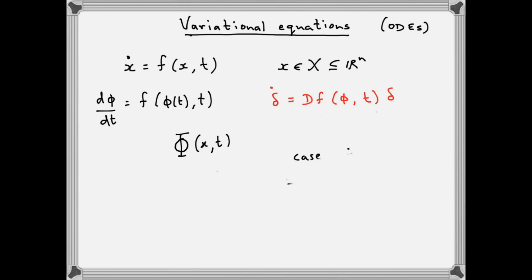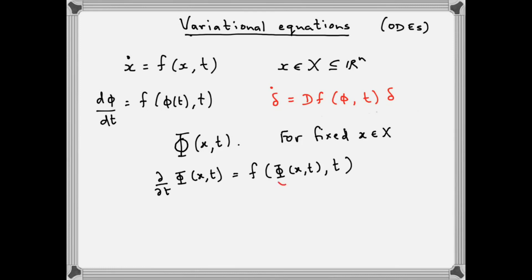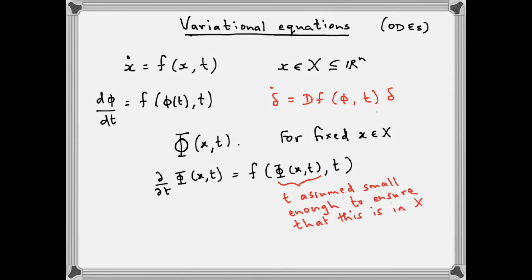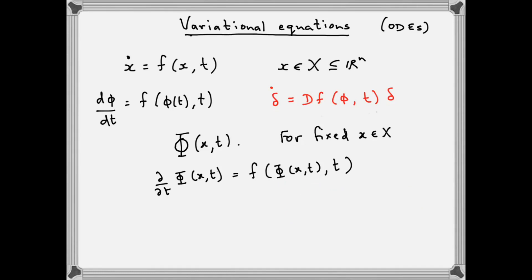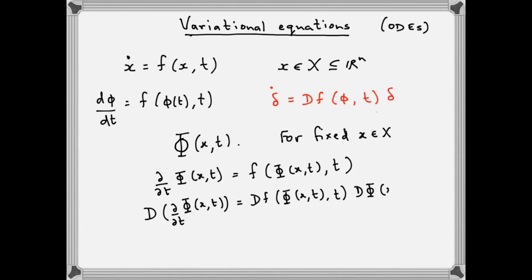What does this have to do with the variational equation? For any fixed point x in the state space, Phi(x, t) gives us a solution to the differential equation, and this makes sense for any t small enough such that Phi(x, t) still lies in the state space. Now suppose we differentiate both sides of this equation with respect to the spatial variable x — we denote this derivative by capital D, assuming everything is sufficiently differentiable. Applying the chain rule gives us an equation which at first sight doesn't seem easy to interpret, but if we can interchange the order of differentiation with respect to t and x, we end up with something much more familiar.